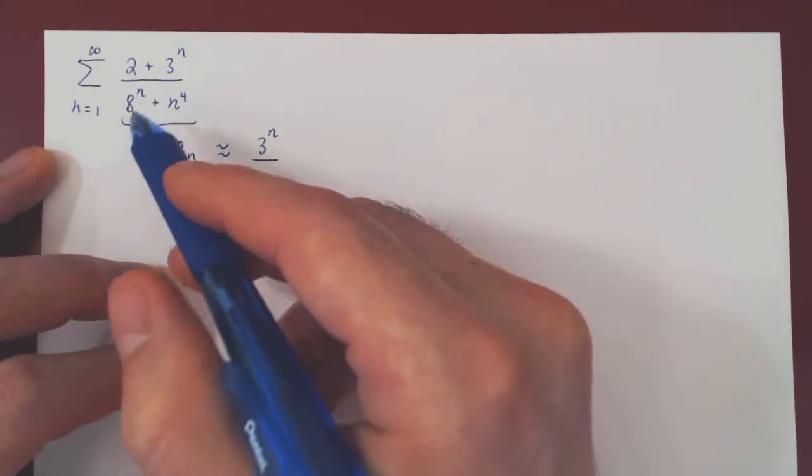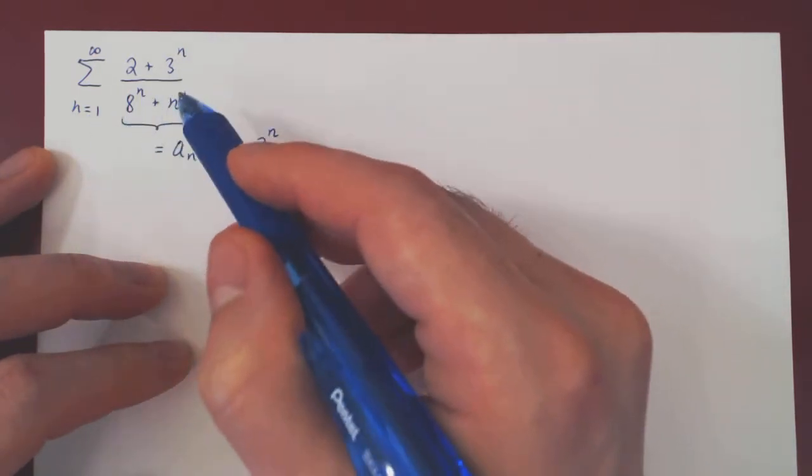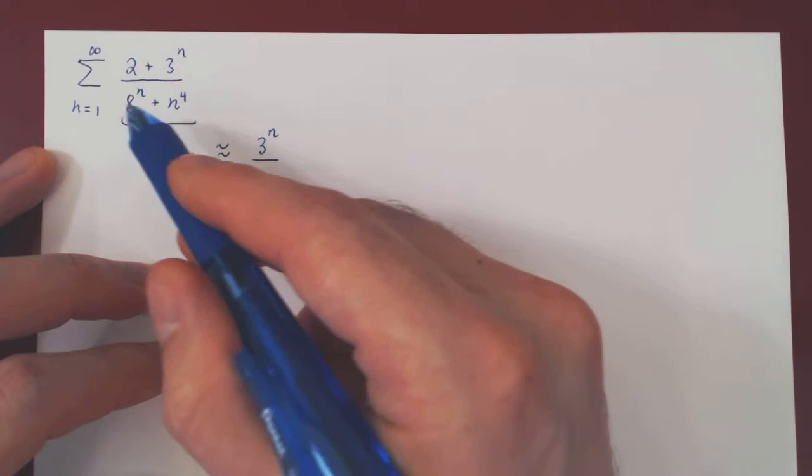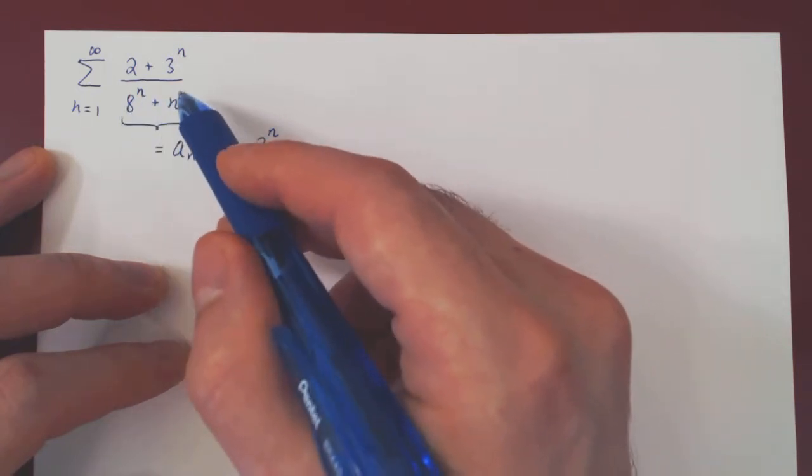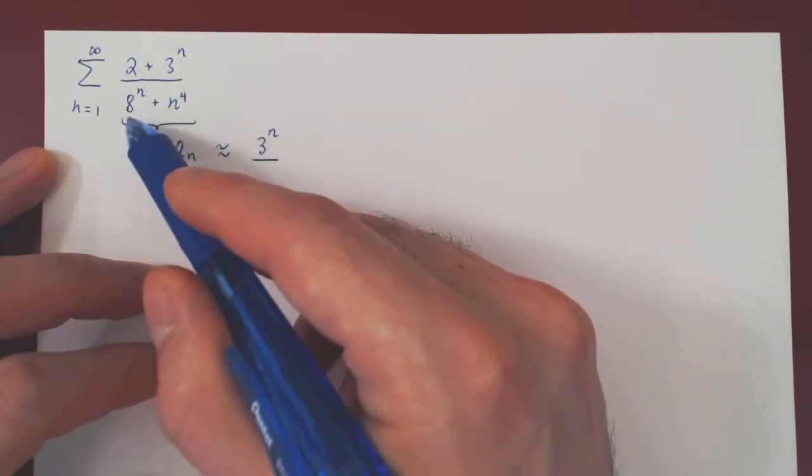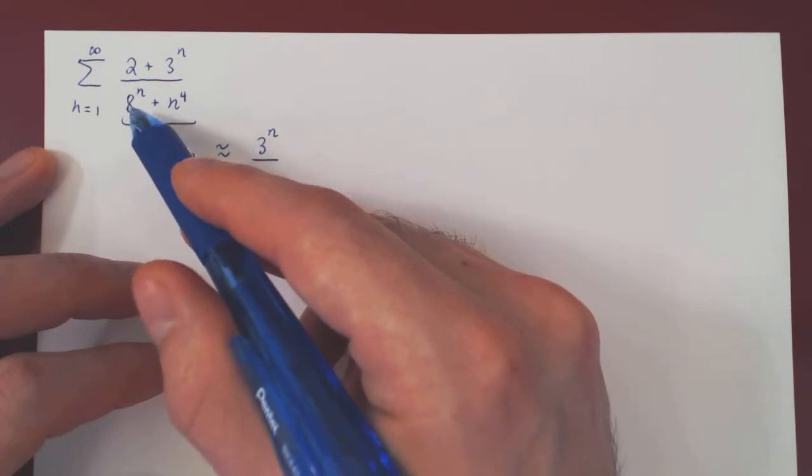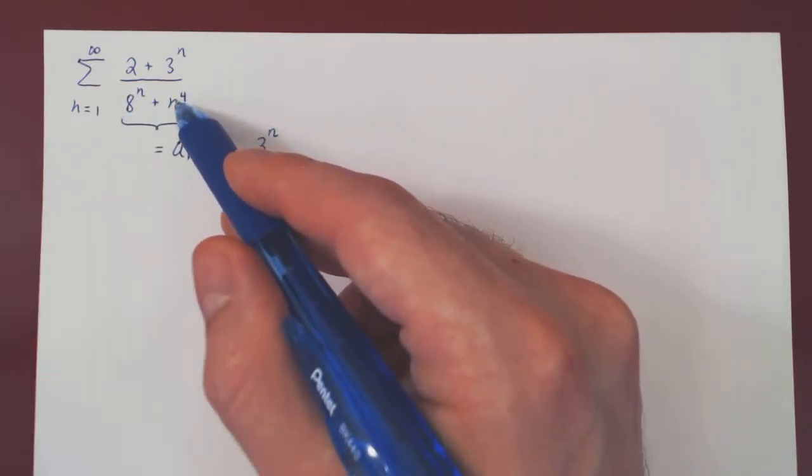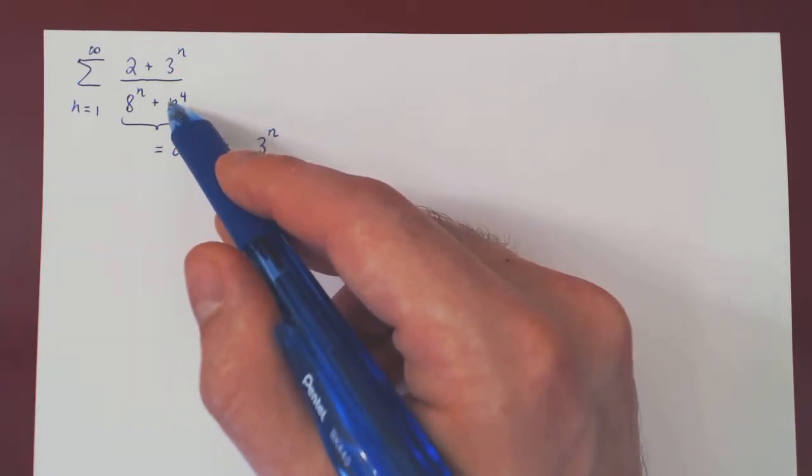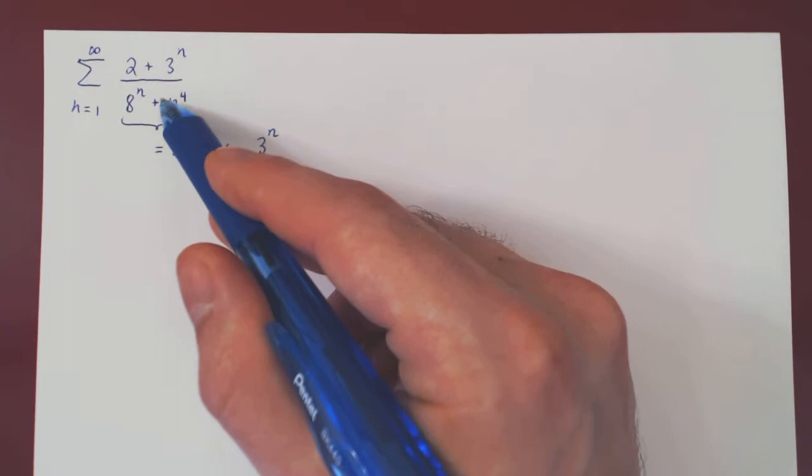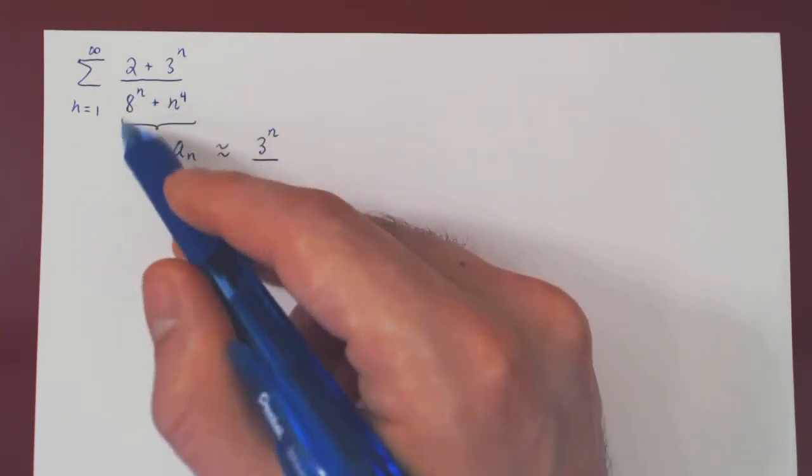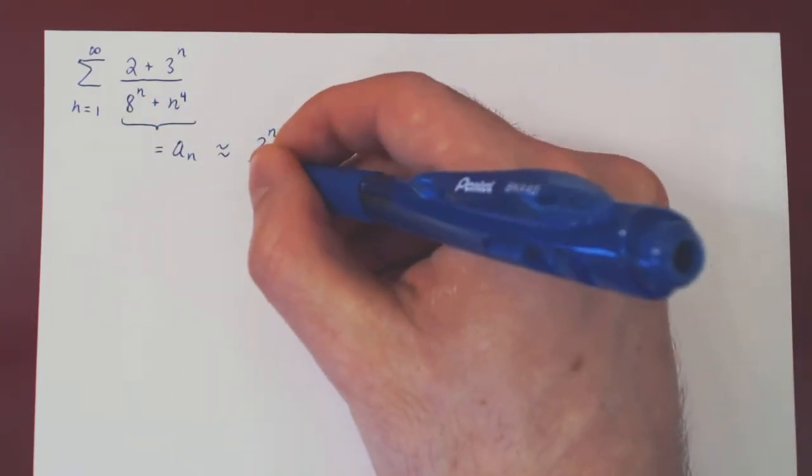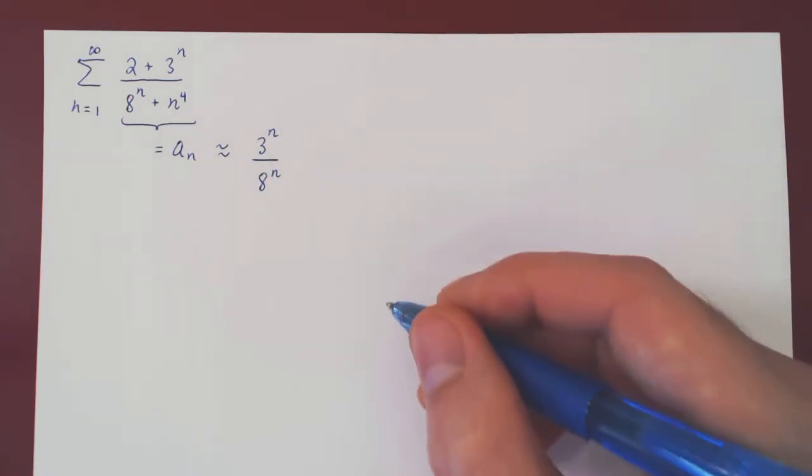When n goes to infinity, 8 to the n goes to infinity, n to the 4 goes to infinity, so both are very large. But 8 to the n is an exponential function, which we know is way bigger than a simple power function. Recall our discussion about a hierarchy of functions. So sure, n to the 4 is large, but way smaller than 8 to the n. And so 8 to the n is the dominant term on our denominator.